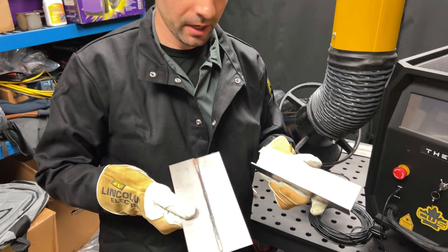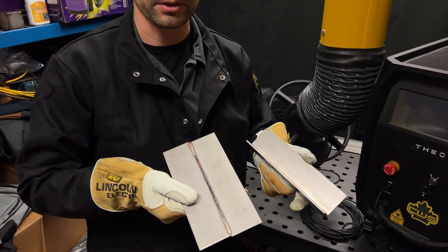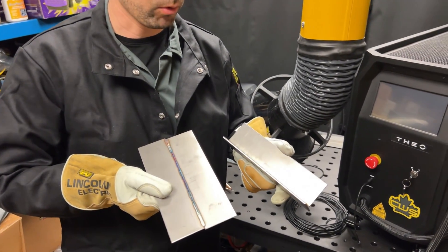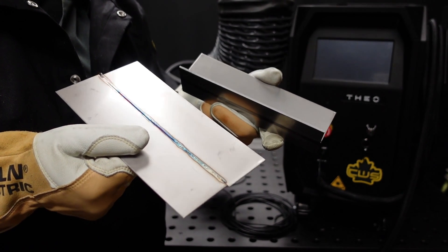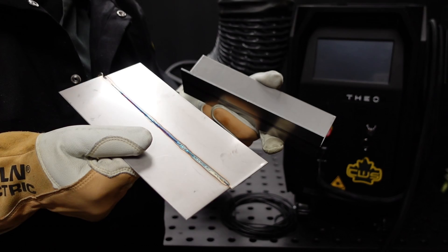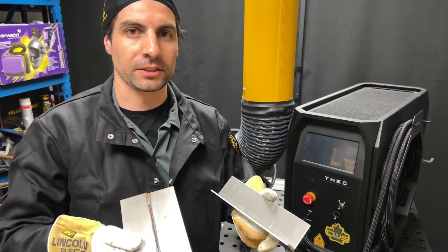So as you guys can see, within minutes we were able to set up the machine and produce repeatable high quality welds on challenging materials, especially for beginner welders. So this is something that if you're doing this kind of work in a production application and you're struggling with repeatability, the Thio handheld laser from Canada Welding Supply, something to take a serious look at.